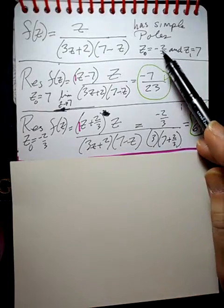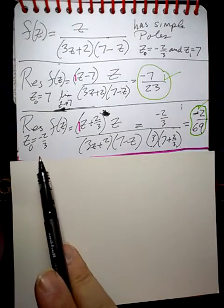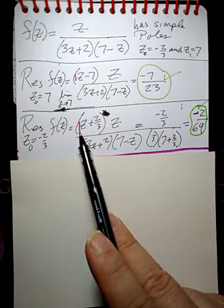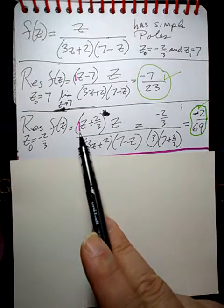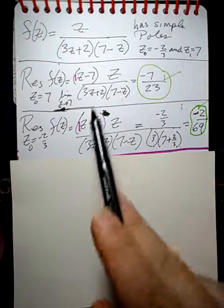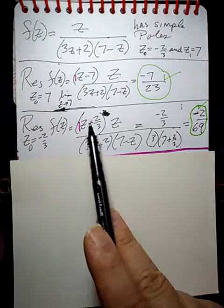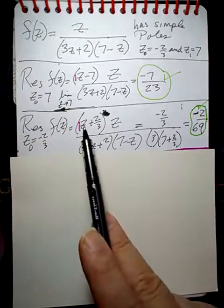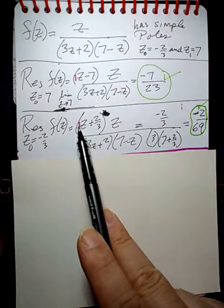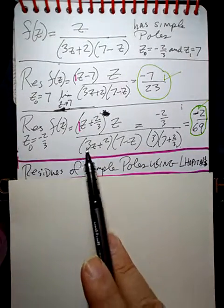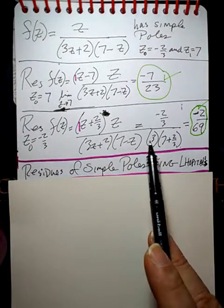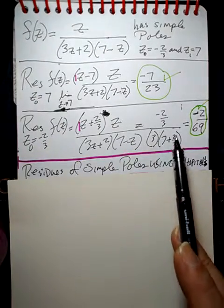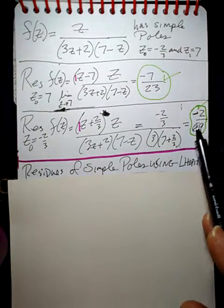Now we'll do the negative two-thirds pole — a little bit more complicated with the fraction, but we'll do the same thing. We'll multiply by z plus two-thirds, because it's z minus negative two-thirds. But you have to have a coefficient of one, so we cannot multiply by three z plus two — our coefficient has to be one. When you cancel this with this, you'll pull a three out, so this will cancel with this to give you a three. Then plug in negative two-thirds here and negative two-thirds here, and after a little bit of math you get negative two over 69.